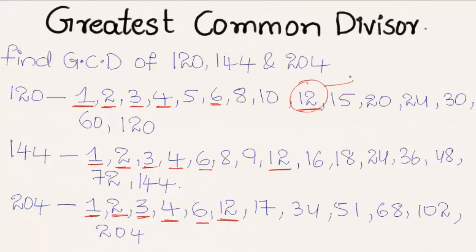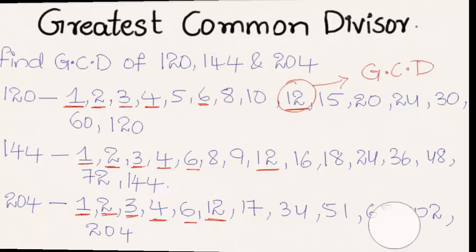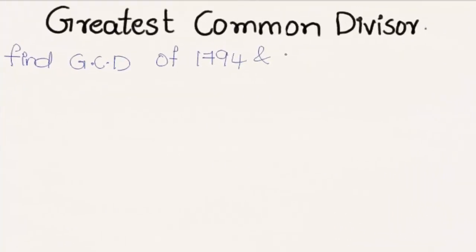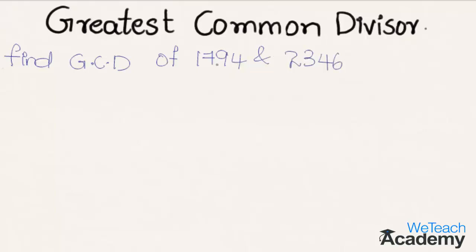The greatest among all the common factors is 12, so we can say that 12 is the Greatest Common Divisor of 120, 144, and 204. Now let us proceed and solve one more example: find the Greatest Common Divisor of 1794 and 2346.